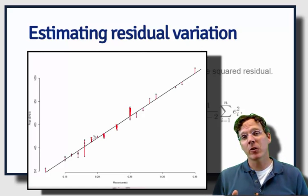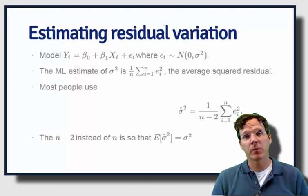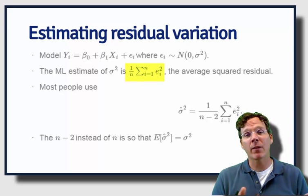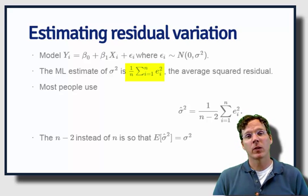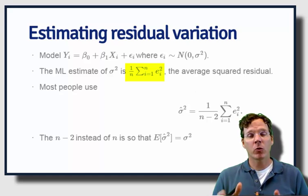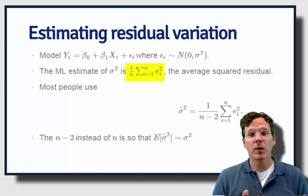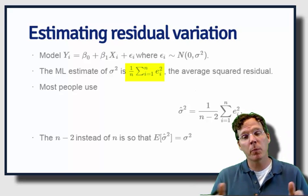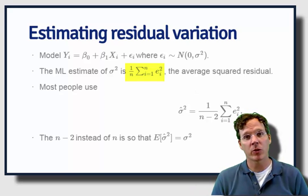Remember, if we include an intercept, the residuals have to sum to zero, which means their mean is zero. So if we want to take the variance of the residuals, it's just the average of the squares. So the sum of the squared residuals times 1 over n is an estimate of sigma squared, the variation around the regression line, the true population variation around the regression line.